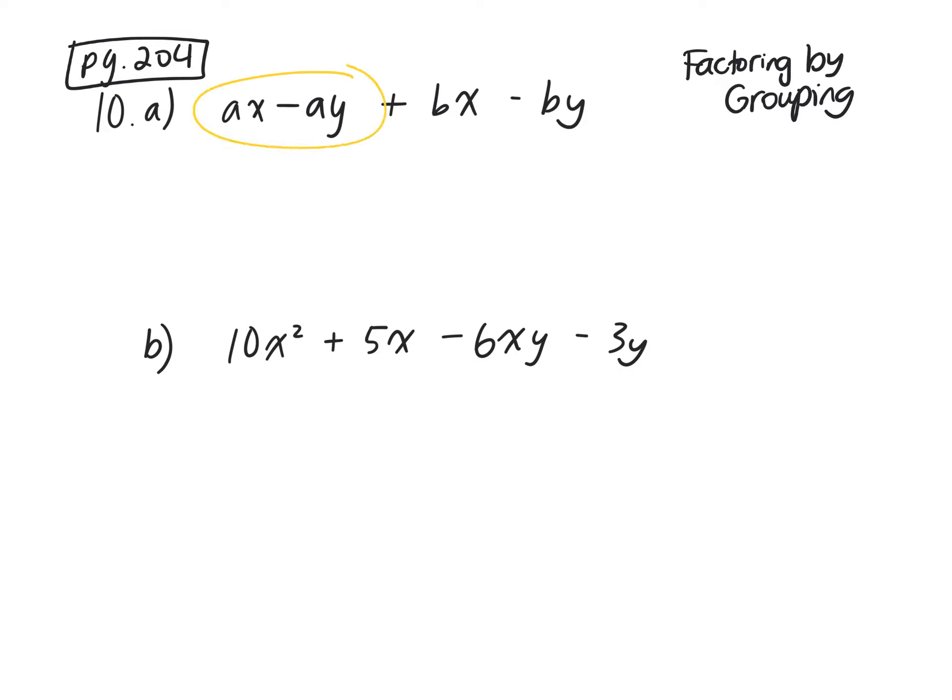The first two terms you can group together because they have a common factor of what? What's the common factor? So I can factor out the A. What am I left with? X take away Y.